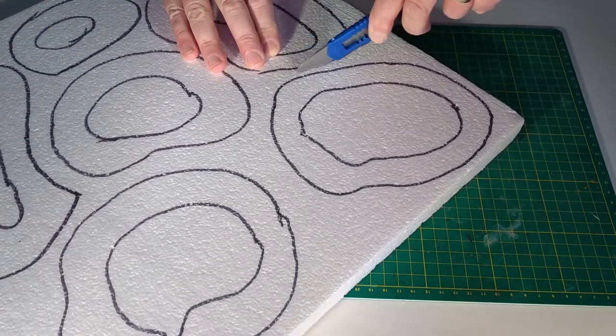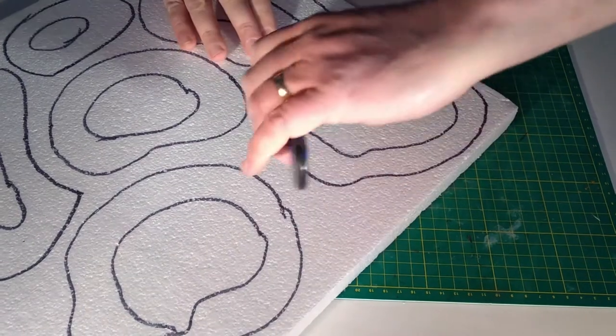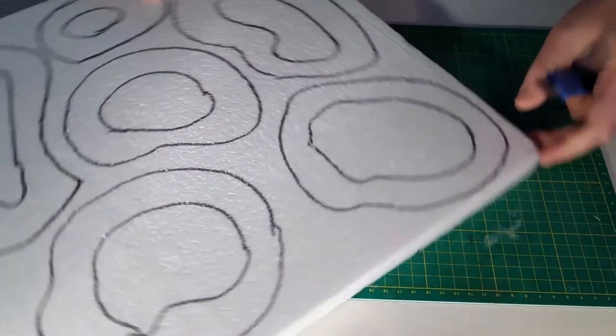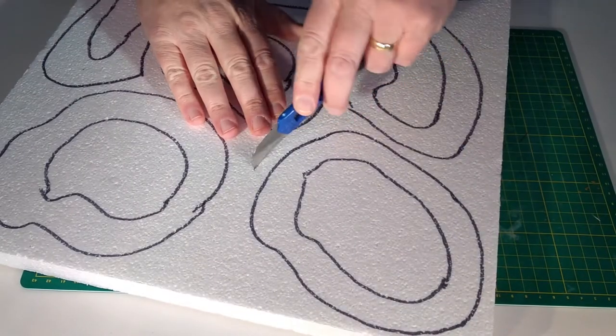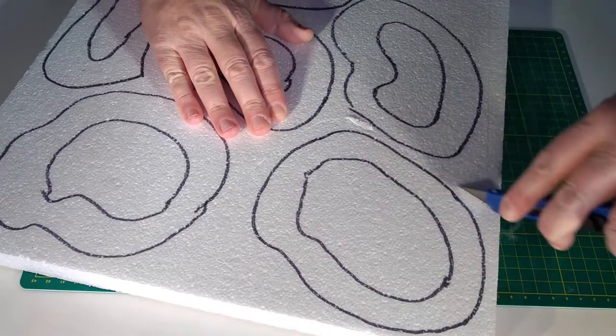Using the craft knife, roughly cut around the shape. Don't worry about cutting out exactly, that will be fixed soon enough. As cutting polystyrene can be very messy, try to work in an area where it can easily be cleaned up, so if like me you have a significant other, you won't get into trouble.